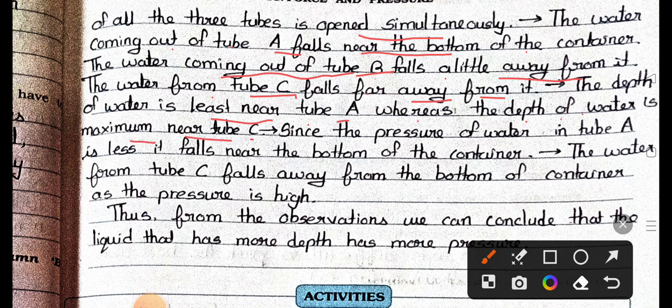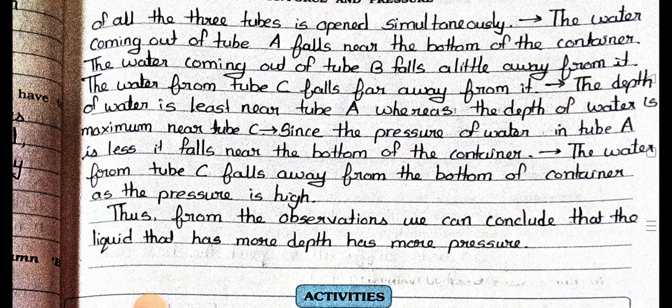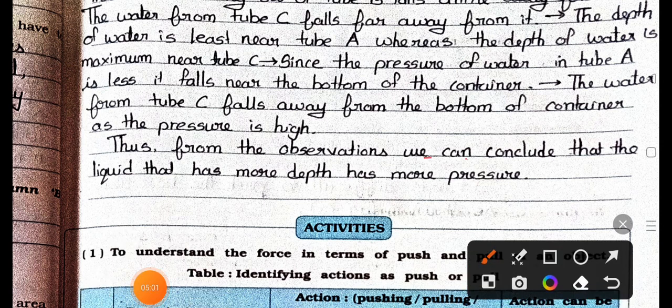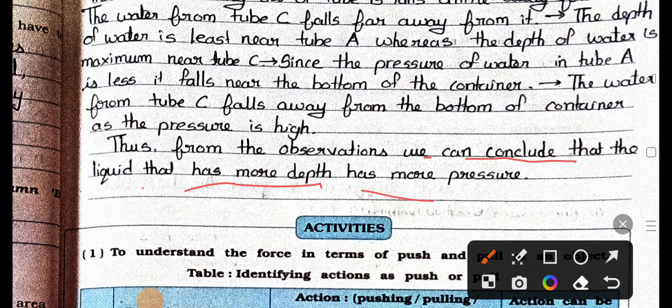Hence, since the pressure of water in tube A is less, it falls near the bottom of the container. The water from tube C falls away from the bottom of the container as the pressure is high. Thus, from the observations, we can conclude that the liquid that has more depth has more pressure.